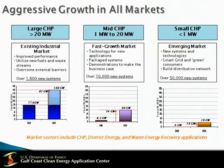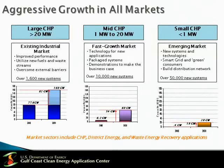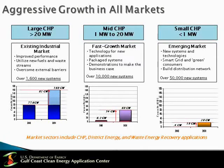This huge increase in CHP adoption is envisioned across all markets. The markets have been classified by DOE as large CHP markets comprising plants greater than 20 megawatts, middle-sized markets ranging between 1 to 20 megawatts, and small-sized CHP markets comprising systems less than 1 megawatt. In terms of new CHP installations, this means 1,600 new systems in the large industrial market, 10,000 new systems in the fast-growth market, and 50,000 new CHP systems in the emerging small CHP market.